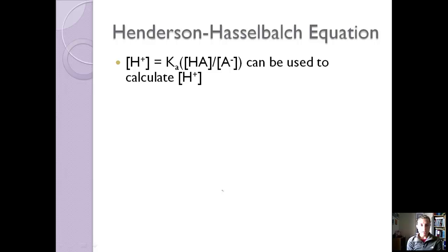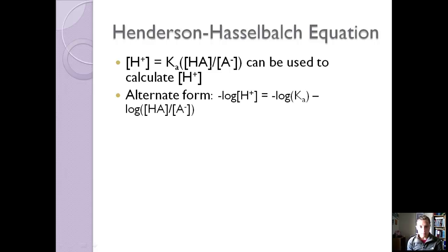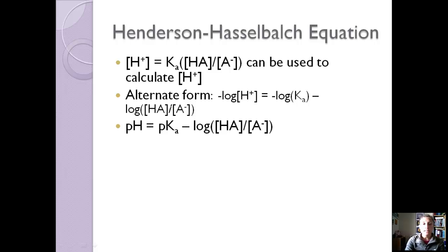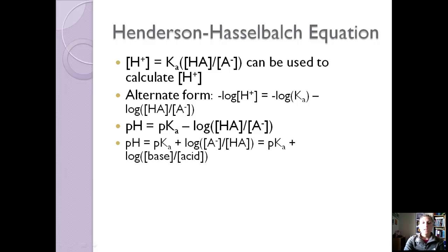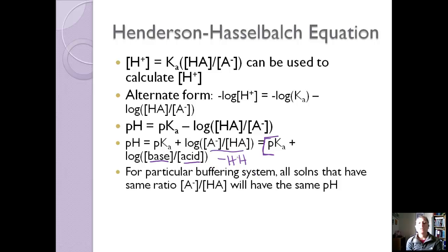We can use the expression H⁺ equals Ka times the concentration of HA over A⁻. We can write this in alternate forms by taking the negative log of everything: negative log of H⁺ equals negative log of Ka minus log of (HA over A⁻), giving us pH equals pKa minus log of that ratio. We can also write it as pH equals pKa plus log of (A⁻ over HA), and in general form: pH equals pKa plus log of (concentration of base over concentration of acid). This is called the Henderson-Hasselbalch equation. For any particular buffering system, all solutions with the same ratio of conjugate base to weak acid will have the same pH.